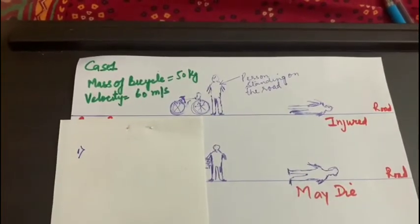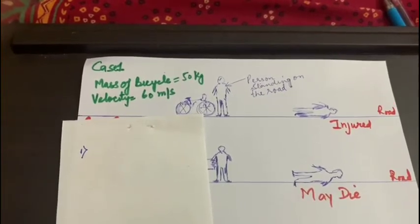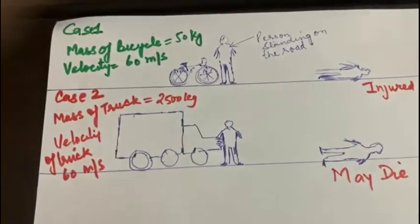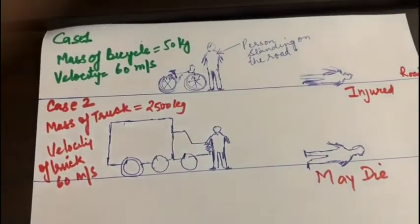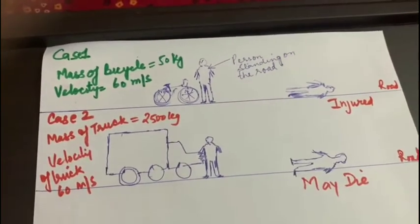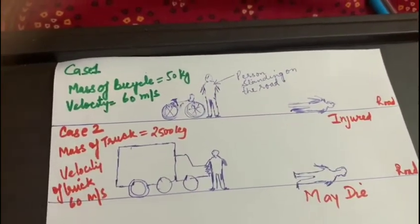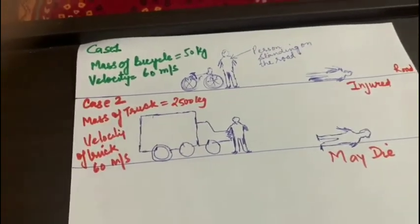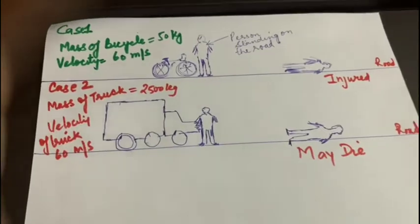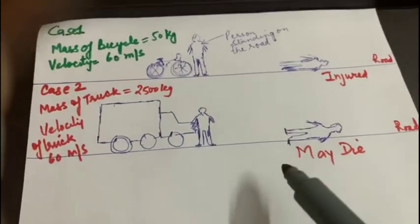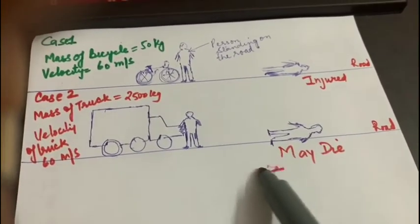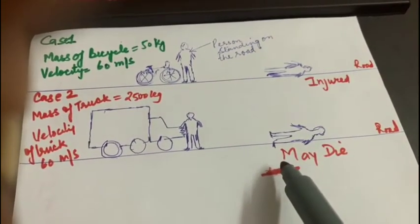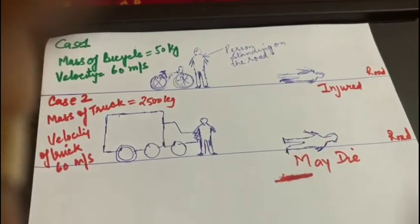If the same person who is standing on the road is hit by a truck of mass 2500 kg, but moving with the same velocity, then it is very common that a person may die or get serious injuries.